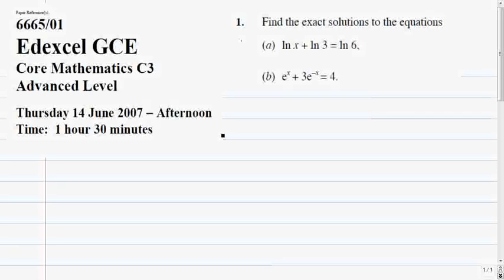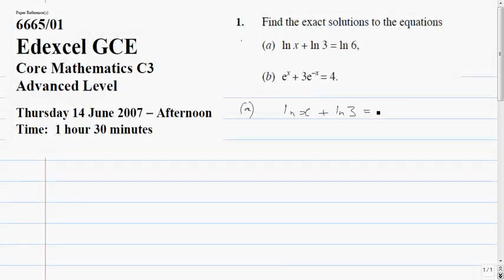C3 June 2007, number one. Find the exact solutions to the equations. Okay, so number one, obviously the answer is two, but just put some working down. Log x plus log 3 equals log 6, so this means 3x equals 6, which means x equals 2. I know that's correct.